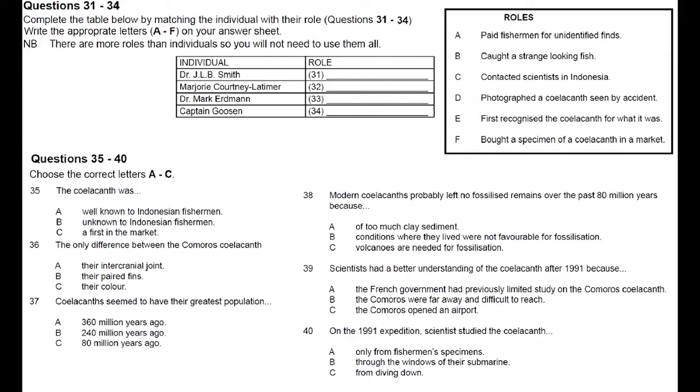The discovery of the coelacanth in 1938 is still considered to be the zoological find of the century. This living fossil comes from a lineage of fish that was thought to have been extinct since the time of the dinosaurs. Coelacanths are known from the fossil record dating back over 360 million years and peaked in abundance about 240 million years ago. Before 1938, they were believed to have become extinct approximately 80 million years ago after mysteriously disappearing from the fossil record.